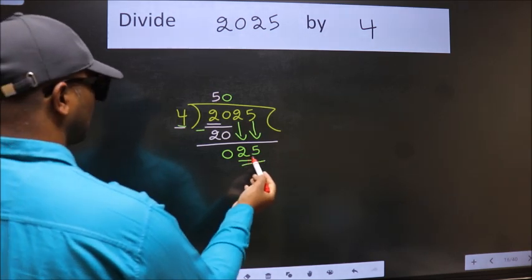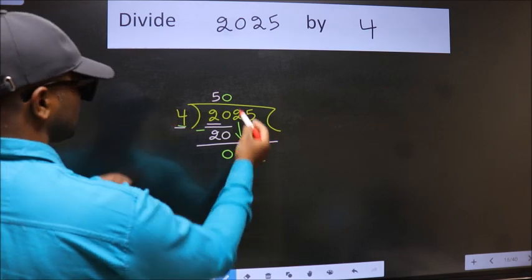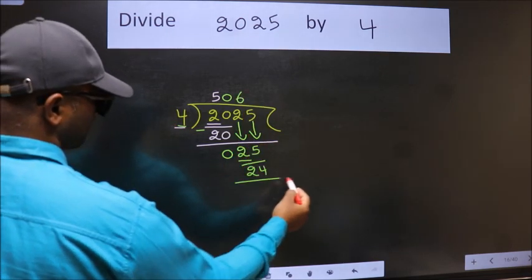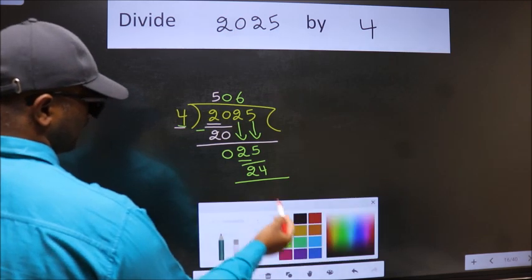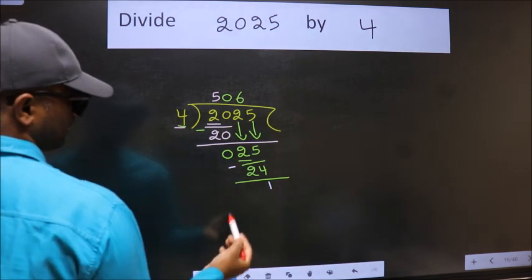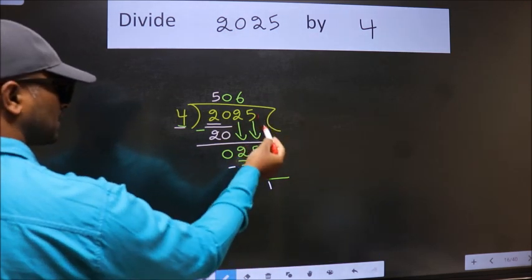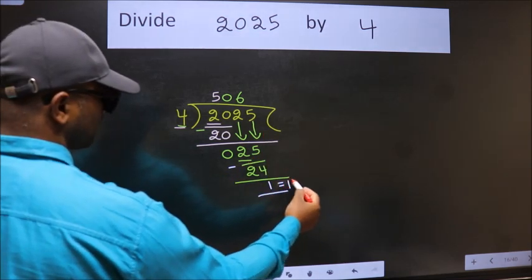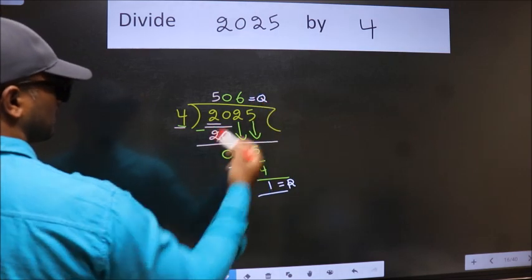A number close to 25 in 4 table is 4 6 24. Now we subtract. We get 1. No more numbers to bring it down. So we stop here. This is our remainder, and this is our quotient.